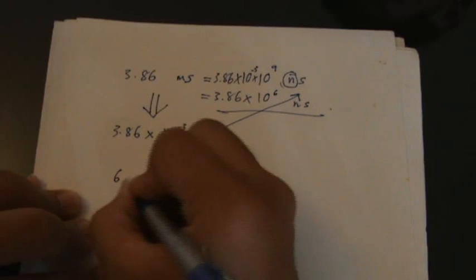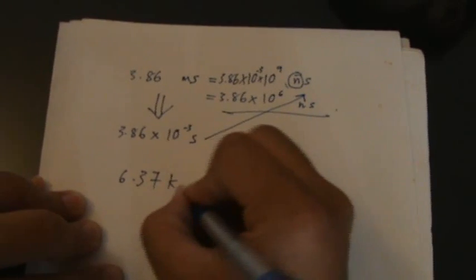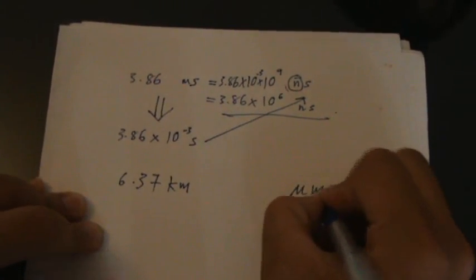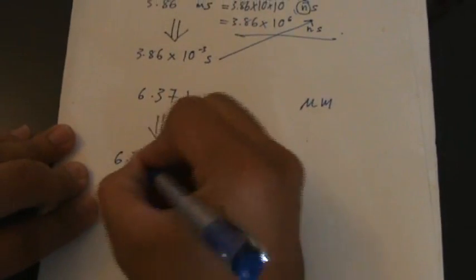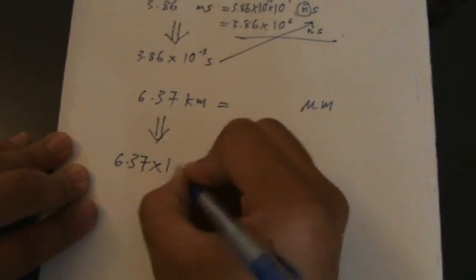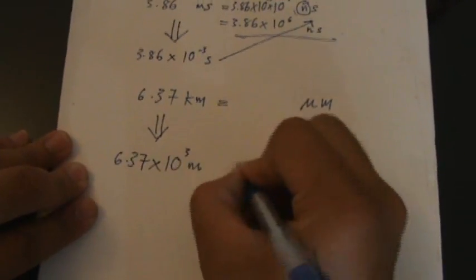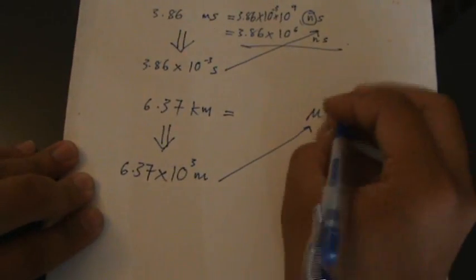For the other question, 6.37 kilometers, you want to change to micrometers. Again, you have to involve two steps. One is you want to get rid of the k, so you put 10 to the 3. Now from meter, you want to create micrometer.